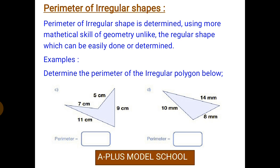We have an example down there. You can see two diagrams. The question says: determine the perimeter of the irregular polygon below. Don't get confused. Polygons are shapes of many sides. That is, it can have three or more sides.